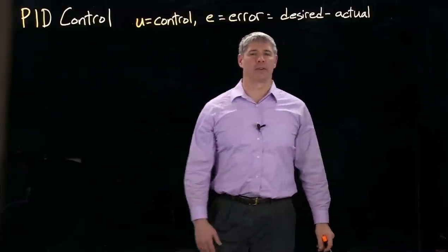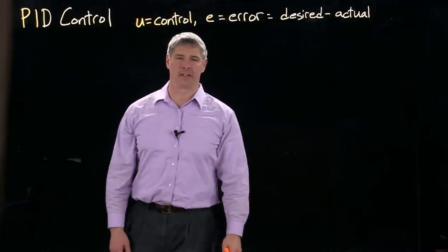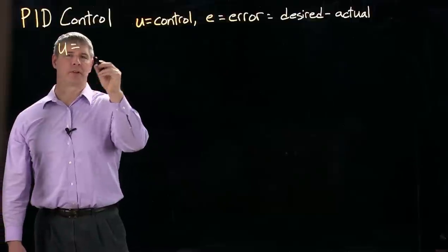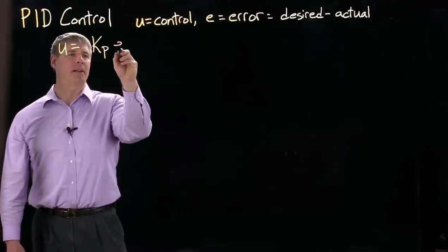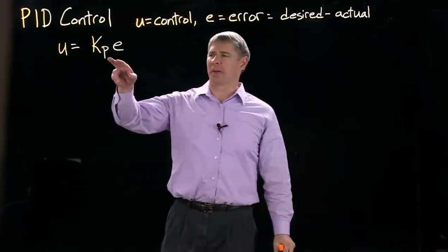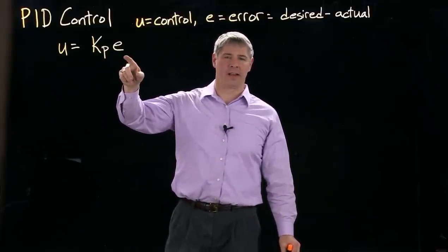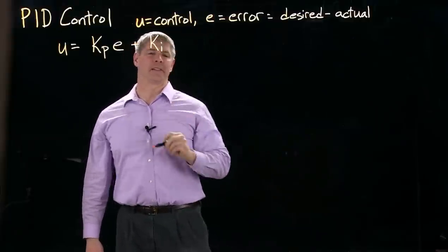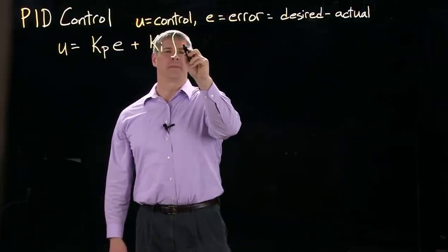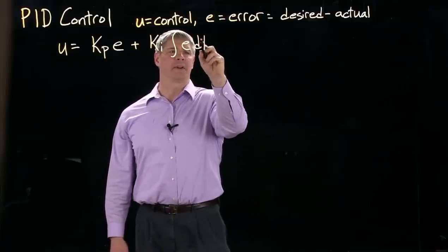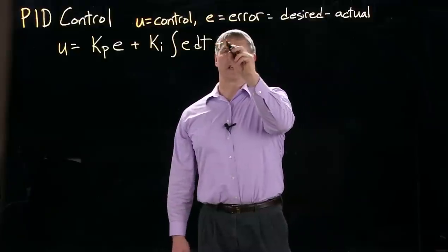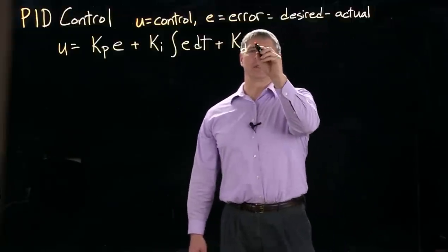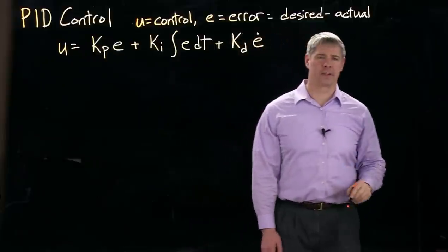So with these definitions of variables, we can write the PID controller as simply U equals the control equals KP times E. So KP is the proportional gain times the error plus the integral gain Ki times the integral of the error as a function of time plus Kd which is the derivative gain times the derivative of error as a function of time.